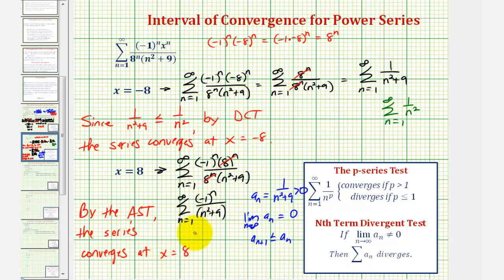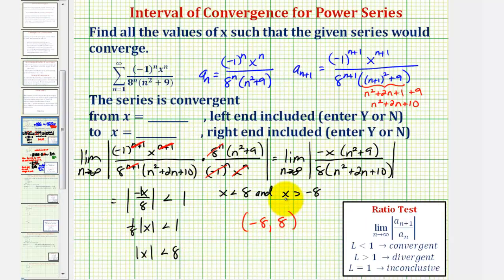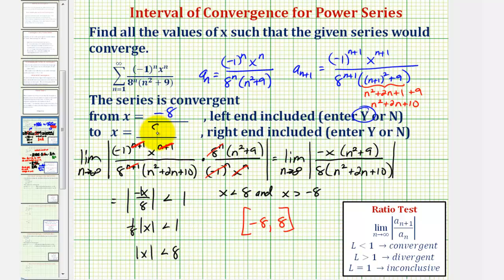Since the series converges at both endpoints, the interval of convergence is not the open interval but the closed interval from negative eight to positive eight. The series is convergent from x equals negative eight — including the left endpoint — to x equals positive eight, including the right endpoint as well.